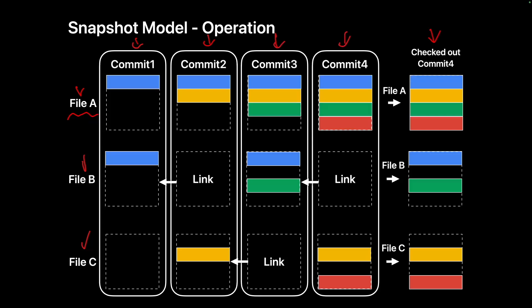Looking at File A: the first version is identical to version 1. In the second version, the added content is stored, and the actual content in commit 2 includes everything from commit 1. In commit 3, the entire content is saved including changes from commits 1 and 2. The same applies to commit 4. Although the actual change is small, the snapshot model saves all the content in each version, not just the differences.